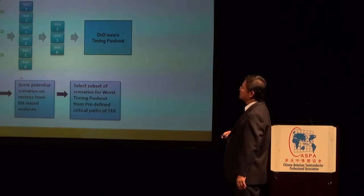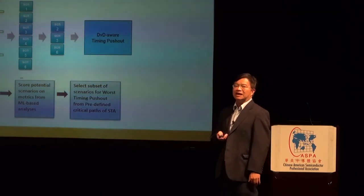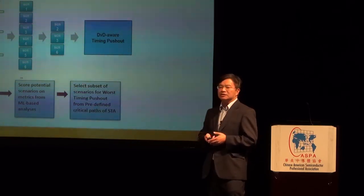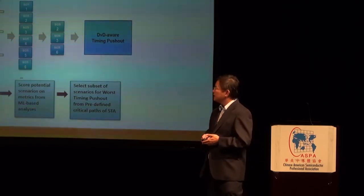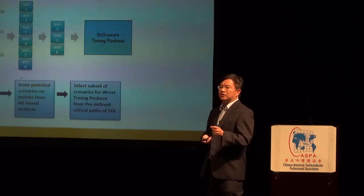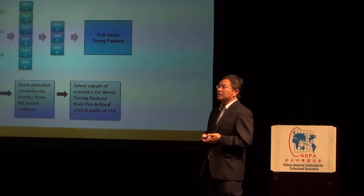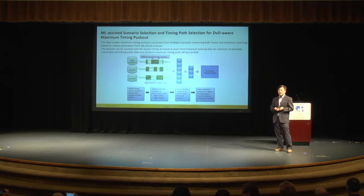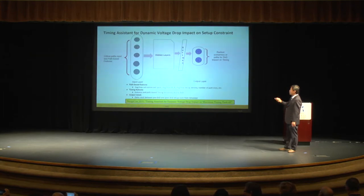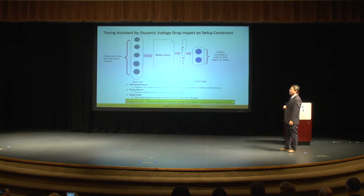Another example is the timing assistant — a very interesting problem that every customer looks into: what is the role and impact on timing? Based on collected data, we determine which scenarios from different blocks need to be run, and also which timing physical paths need to be solved. This problem will be presented next year at Design Automation Conference. We get very good results with this approach as well.